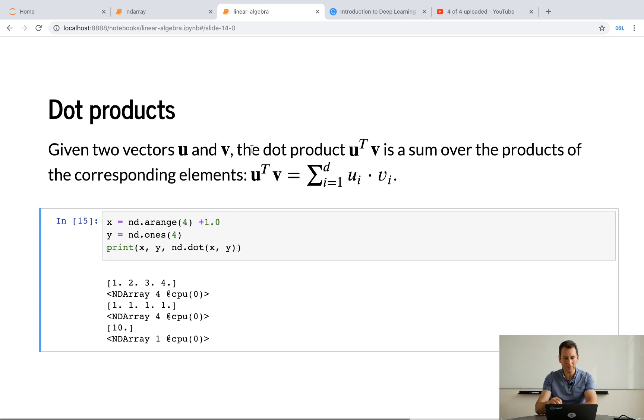Now, life wouldn't be complete without dot products. So, if I have, let's say, x and y, and I want to compute the inner product. Well, I can do that by just invoking nd.dot. And this doesn't do anything else, but just point-wise multiply and sum.